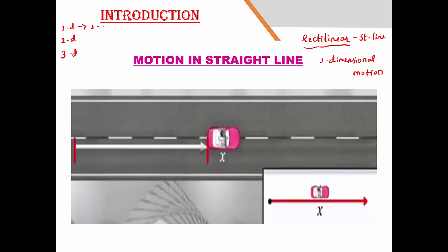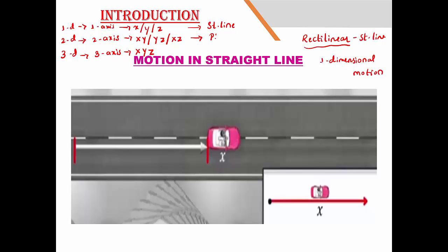One-dimensional means we consider only one axis. Two-dimensional means we consider two axes — XY, YZ, or XZ. Three-dimensional means all three axes: XYZ. One axis corresponds to a straight line, two axes correspond to a plane, and three axes correspond to space.